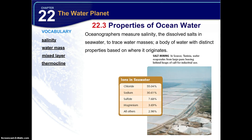Salt in seawater is one of the major properties of a water mass. If we break down the different ions in seawater, chloride is number one, sodium is number two — and obviously both of those combined make salt. Sulfates, magnesium, and all the others are lower percentages as well.